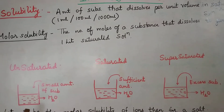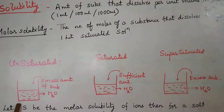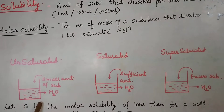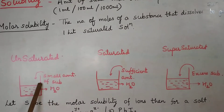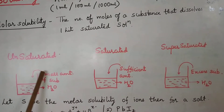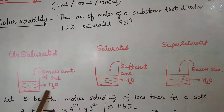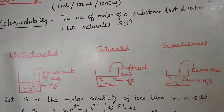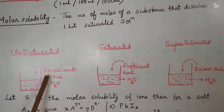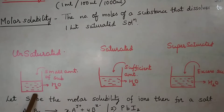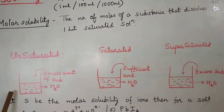So just see here — what is an unsaturated solution? When you take some amount of water in a beaker and add a small amount of substance, that substance dissolves easily in water. That type of solution becomes unsaturated. The amount of substance added is very small compared to water, hence the solution is said to be unsaturated.